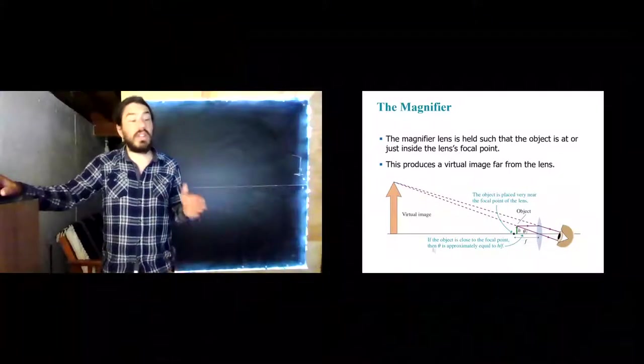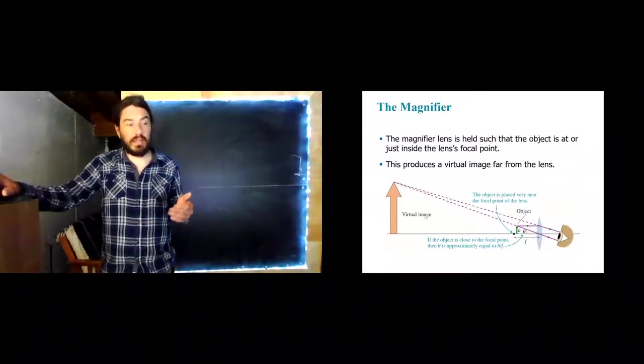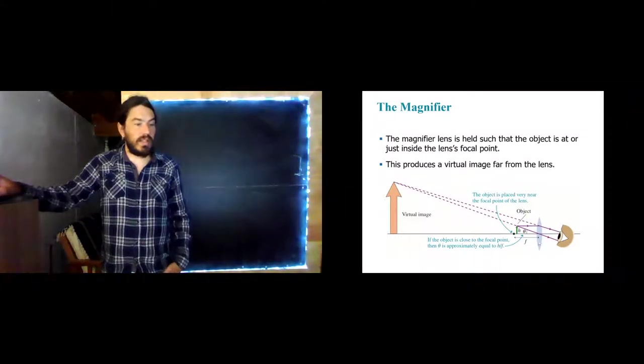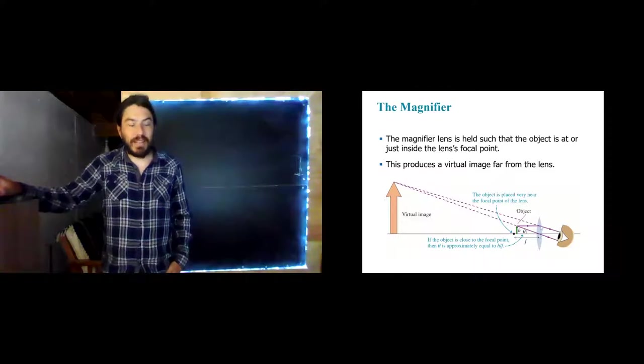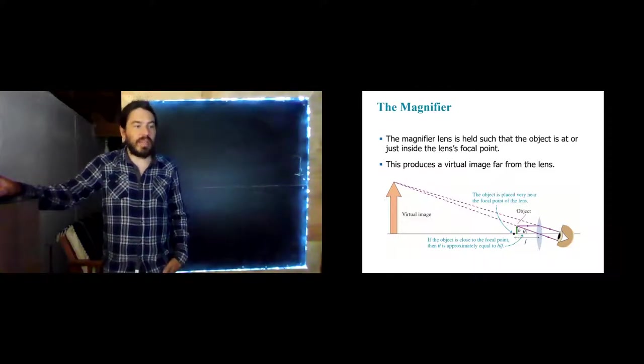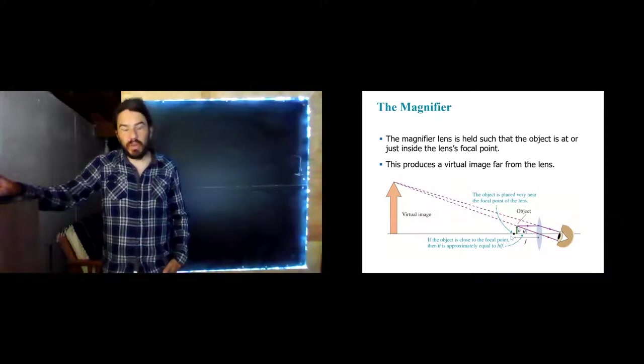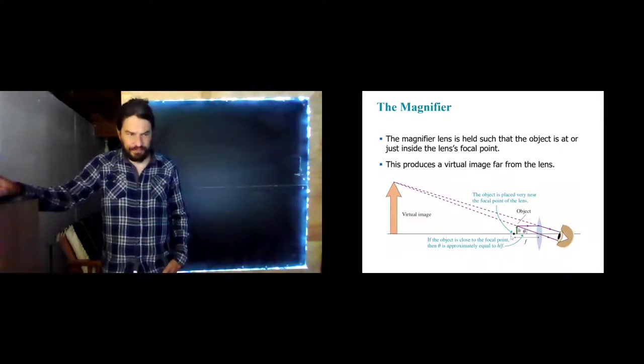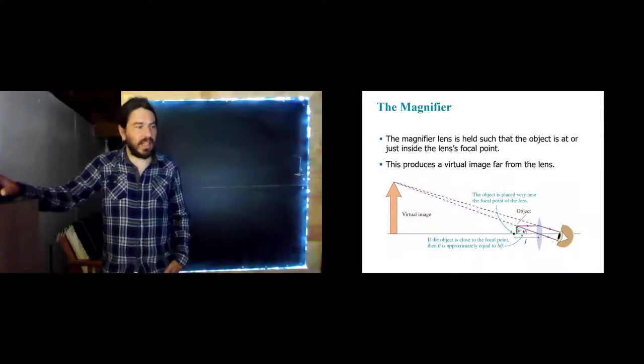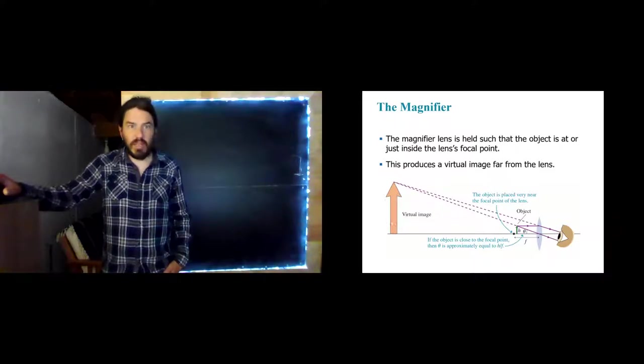So in order to kind of wrap our brains around a microscope, let's talk real quick about the magnifier because really a microscope is just two magnifiers put together. So here is a schematic of the magnifier. And we can see here that a magnifier is a single converging lens. And we put the object inside but close to the focal point.